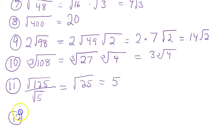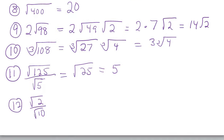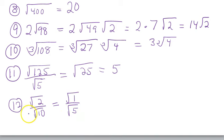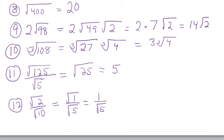For the square root of 2 over the square root of 10, the numbers reduce: 2 over 10 simplifies to 1 over 5. Since both are under square roots, put the reduction under square roots. An important note: you cannot reduce something outside a square root with something inside. The square root of 1 is 1, so this simplifies to 1 over the square root of 5.